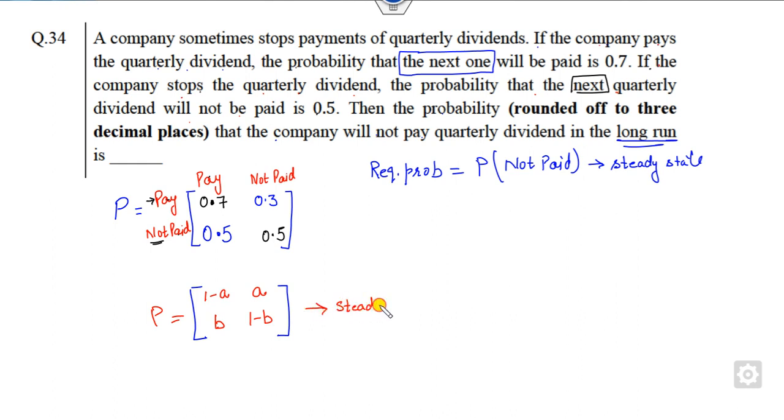You can simply write the steady state probability of this will be, you can simply take the diagonal entries. This is the pay and this is the not paid.